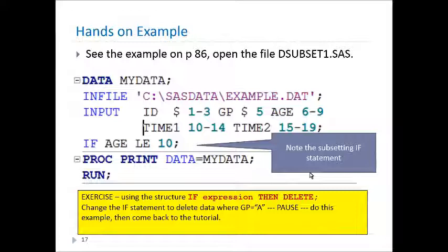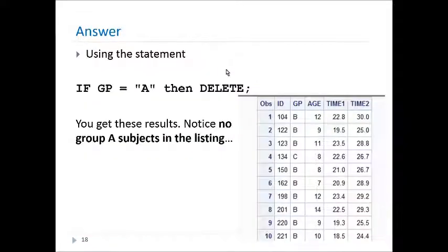Well, let's do an exercise where we're going to use the if then delete version of the if statement. And what I want you to do is I want you to check to see if group equal A. And we want to delete all data for group equal A. So you'll have the expression if group equal A, then delete. Go ahead and put that in the program replacing the age less than 10 statement. And pause here and then come back to see if you got the right answer. Okay, this is the answer you should get if you entered the code correctly. If group equal A, then delete ends up with this column here called group with no A in it, as we would have expected.